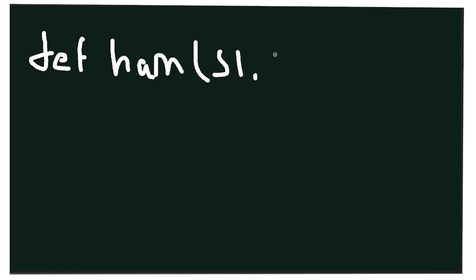What we want now is a function — let's call it 'ham' — which will take two strings, s1 and s2. What we want it to do is go through each string at the same time and compare each character: compare character 0 with character 0, character 1 with character 1, and so on. If they are equal we return 0, and if they are different we increase the difference by 1.